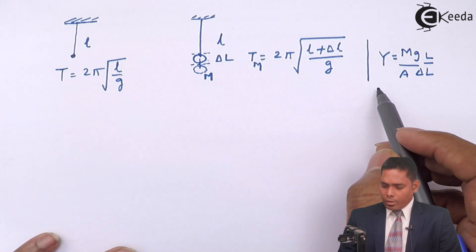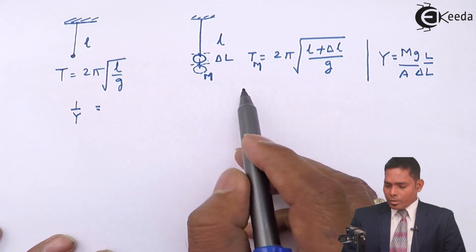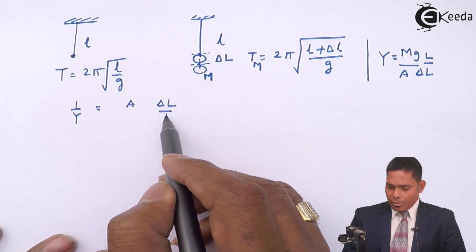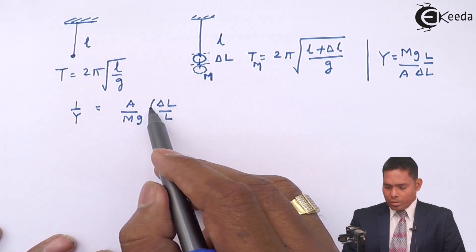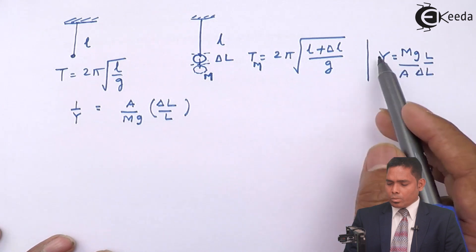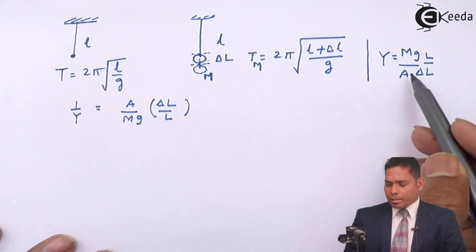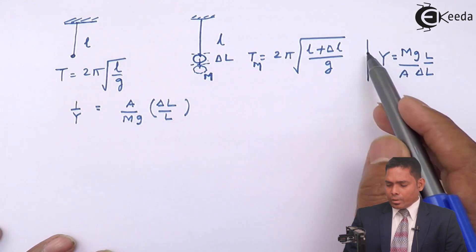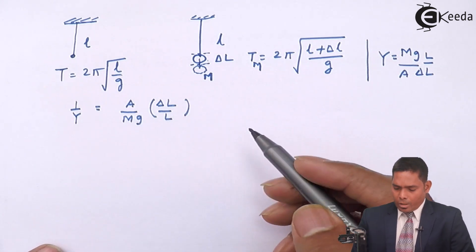So if I want to write 1 upon Y, then 1 upon Y will become A delta L over L divided by M into G. These are for it. Delta L comes to this side, L comes to that side. Y goes to that side, A goes to that side. So A delta L will be on this side and Mg will be down.